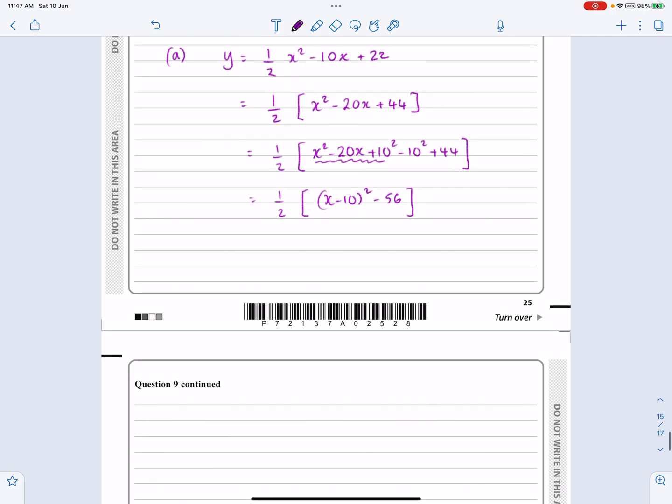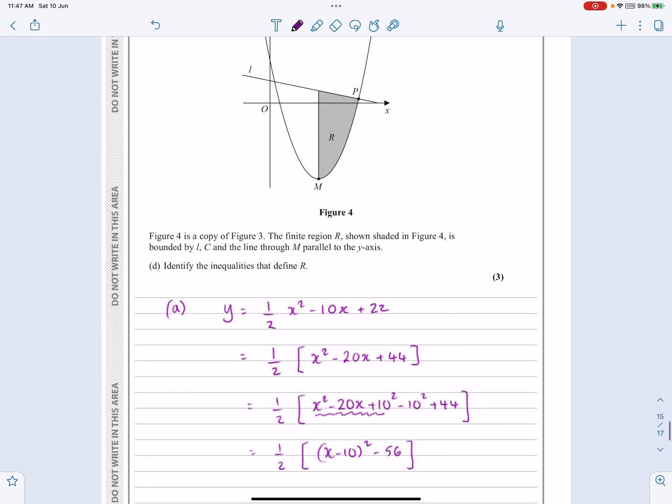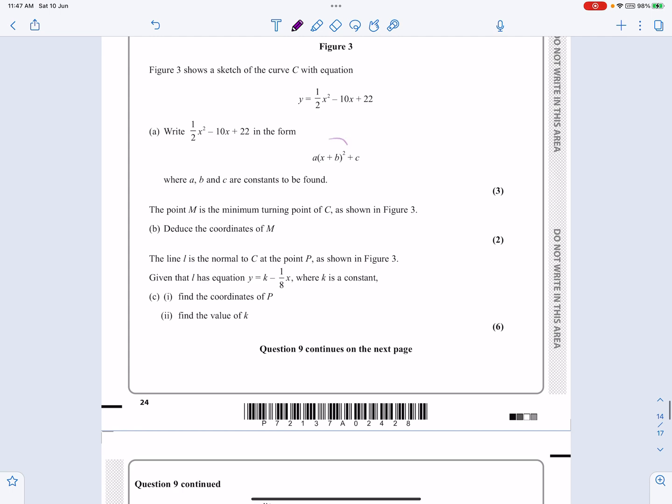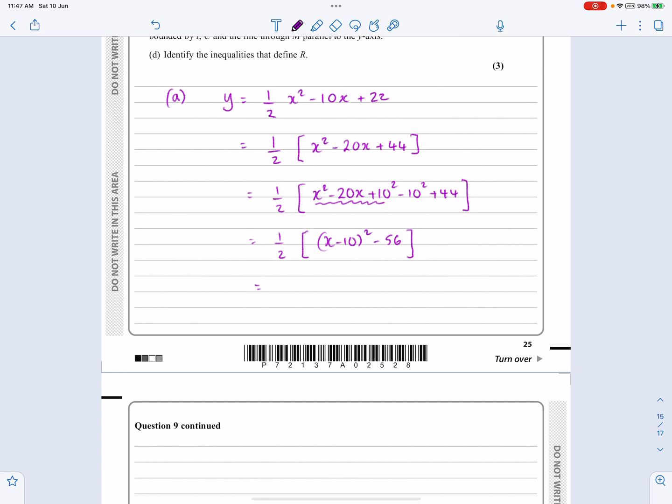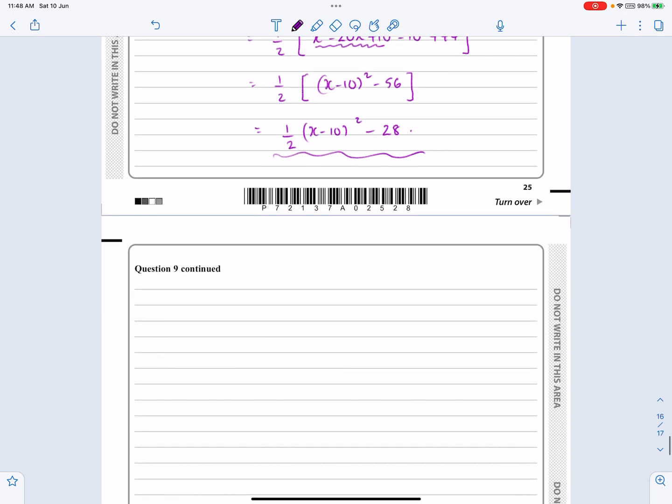OK, so I've got that written down as a completed square. But if you look at the way they want the answer, the C there has not got an A by it. So that means we have to actually multiply this bracket out. So I'm going to get a half (x minus 10) squared minus 28. And that's just to have it in the same format as they've got their answer for part A.